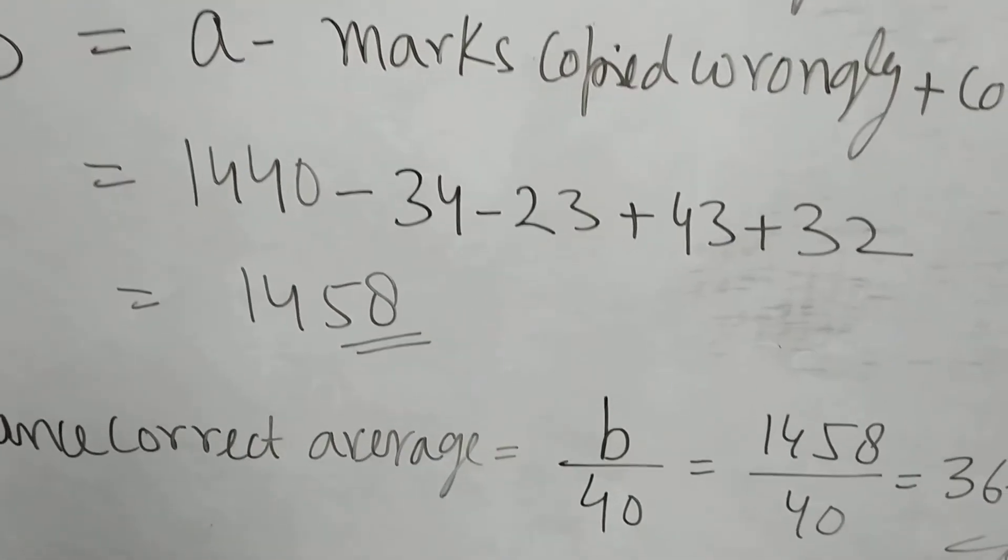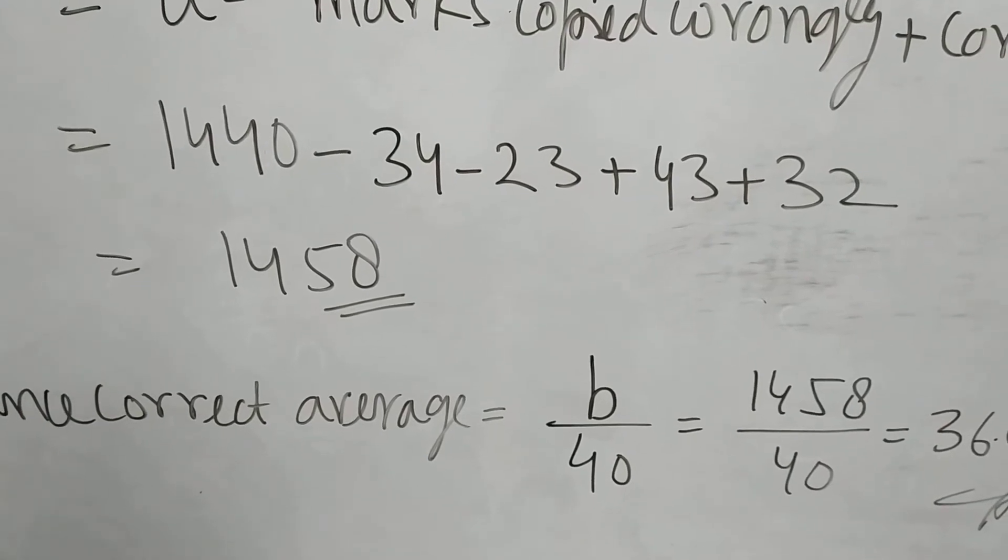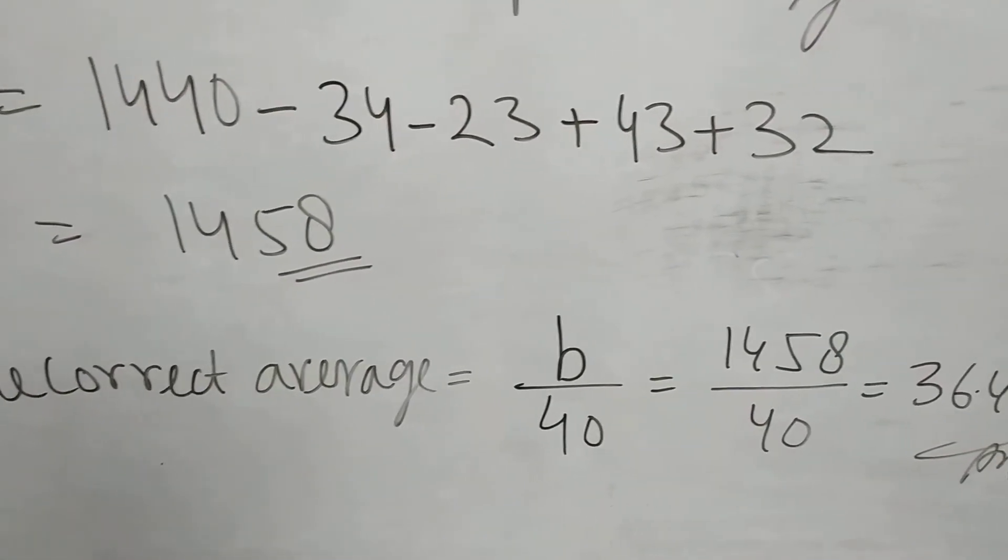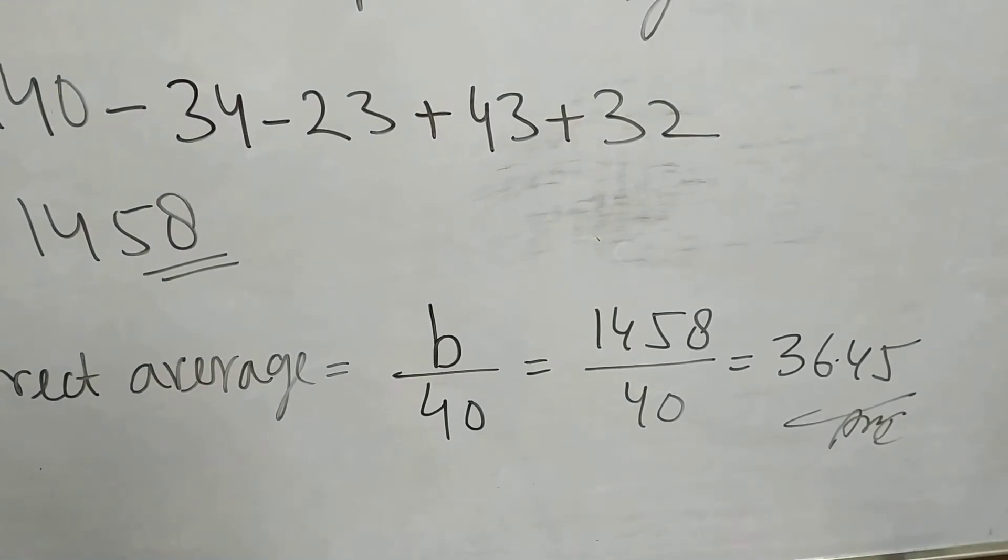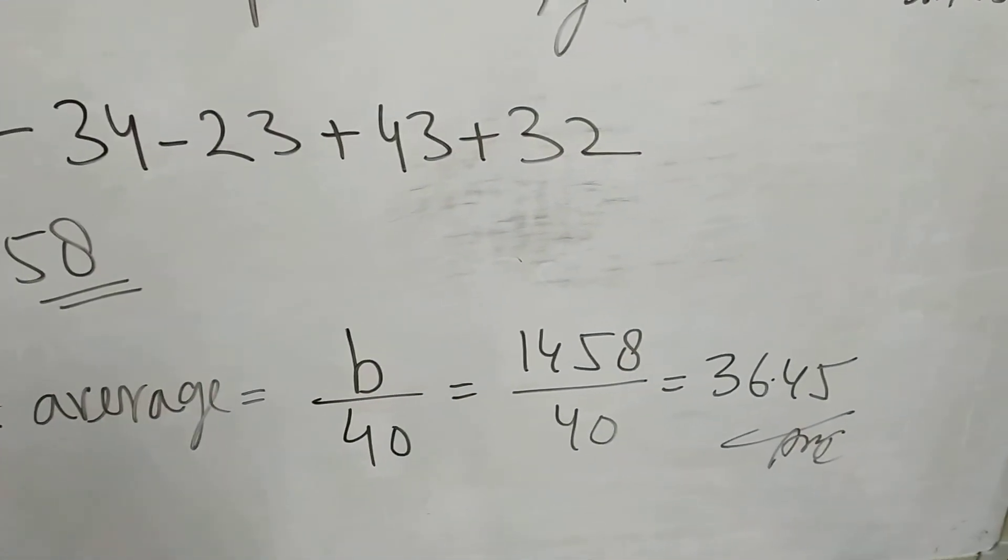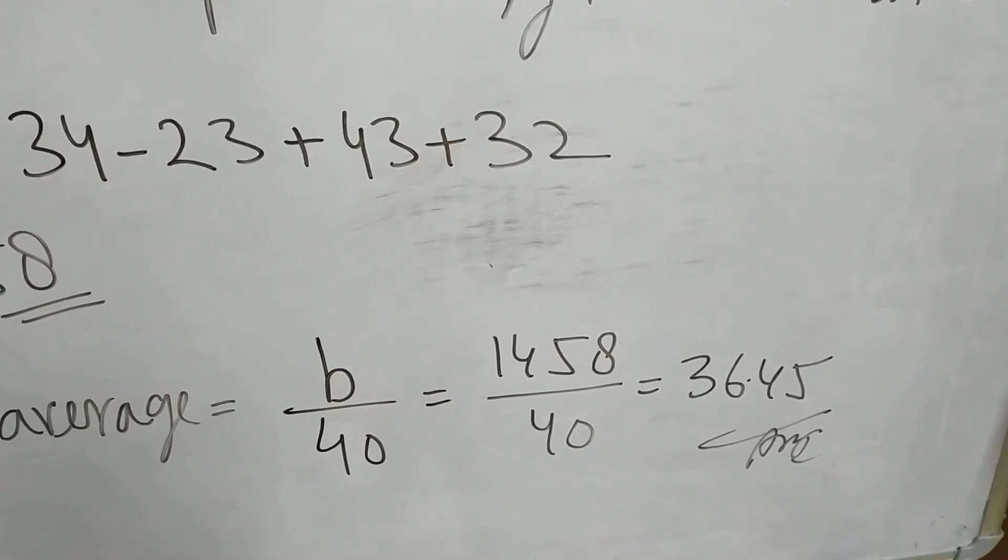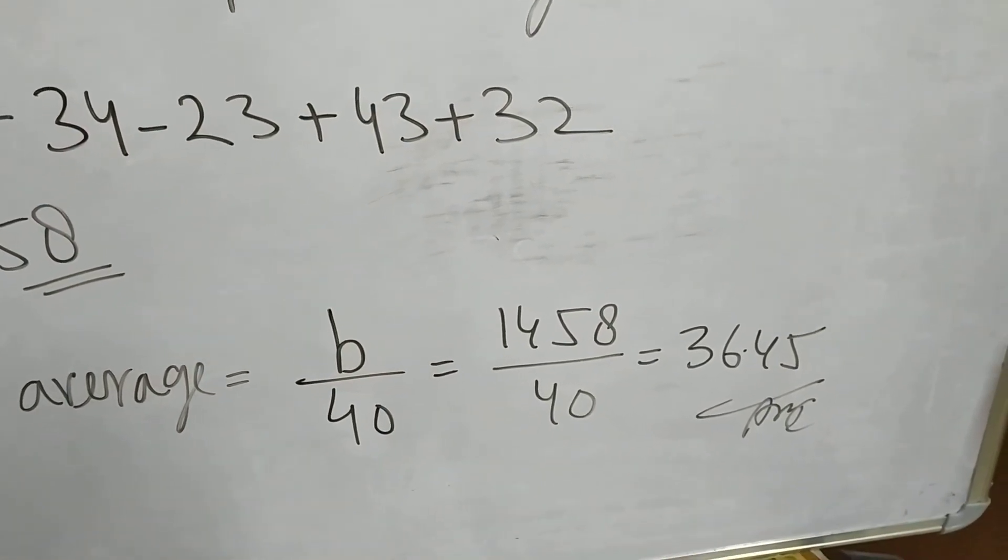So we will divide it by the correct number of students, that is 40. So 1458 divided by 40 equals 36.45. That is the correct answer.